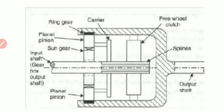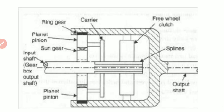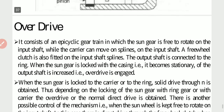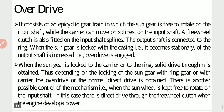Through splines, the free wheel clutch is fitted and the output shaft is fitted through a cover. The overdrive consists of an epicyclic gear train in which the sun gear is free to rotate on the input shaft while the carrier can move on splines on the input shaft. A free wheel clutch is also fitted on the input shaft splines. The output shaft is connected to the ring. When the sun gear is locked with the casing, it becomes stationary and the speed of the output shaft is increased — that is, overdrive is engaged.